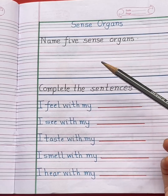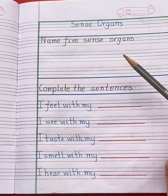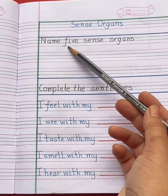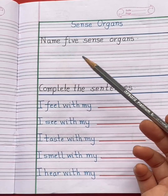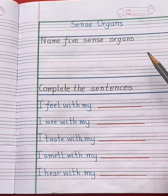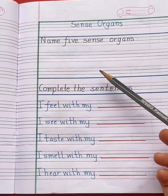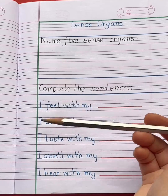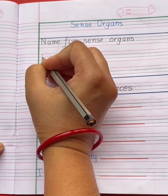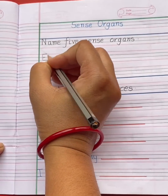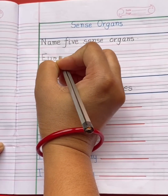Children, how many sense organs do we have? Five: eyes, ears, nose, skin, and tongue. So first we will write eyes. E-Y-E-S, eyes.